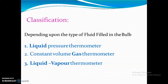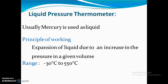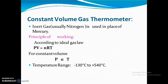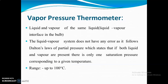These are the different types. For liquid pressure, mercury is used and the range is minus 30 to 550 degrees centigrade. For constant volume gas, the formula is used and P is directly proportional to temperature; the temperature range is 130 degrees centigrade to 540 degrees centigrade. For the vapor pressure thermometer, liquid and vapor of the same liquid are used. It does not have any error as it follows Dalton's law for partial pressure. The range is up to 100 degrees centigrade.